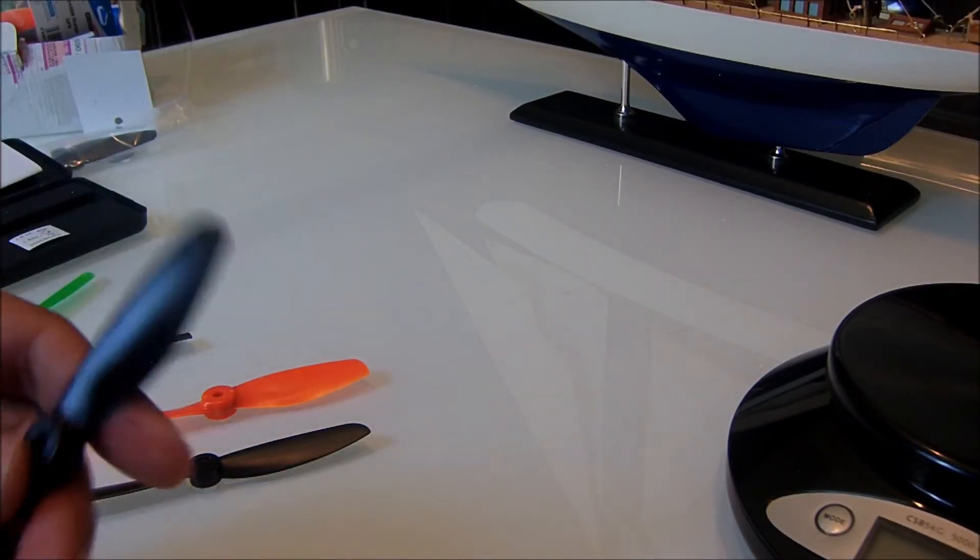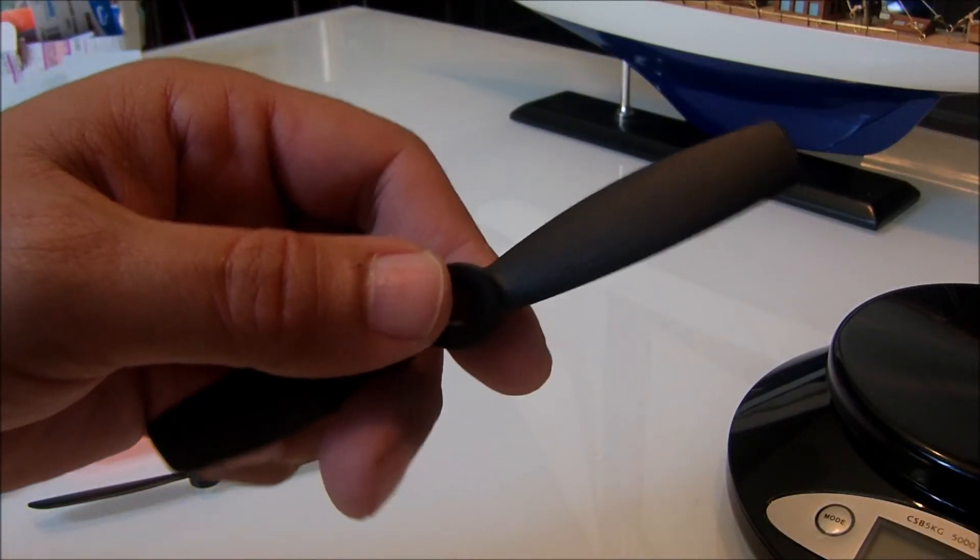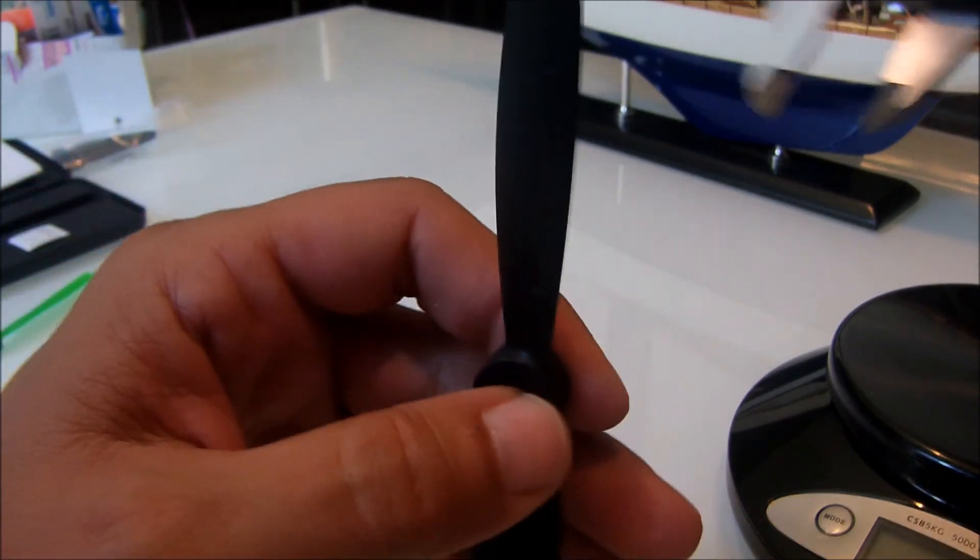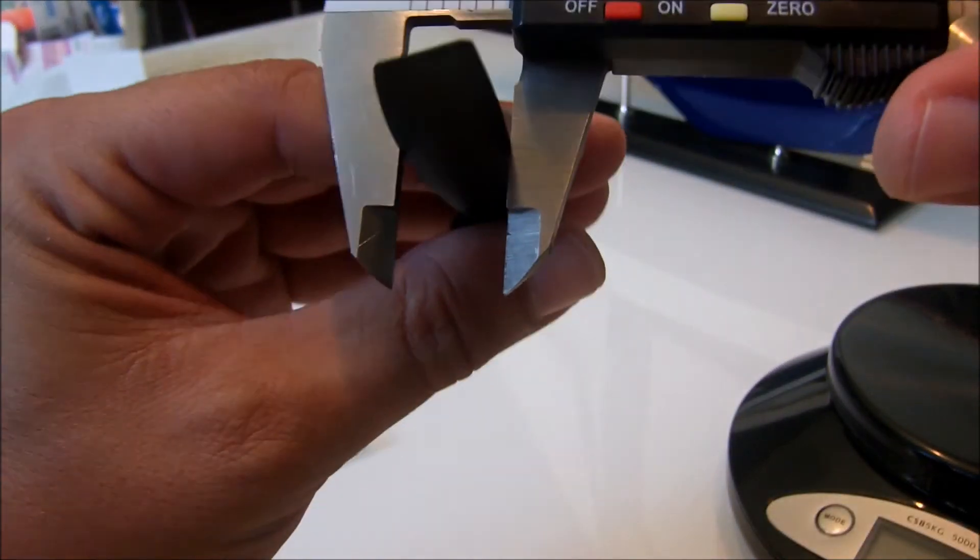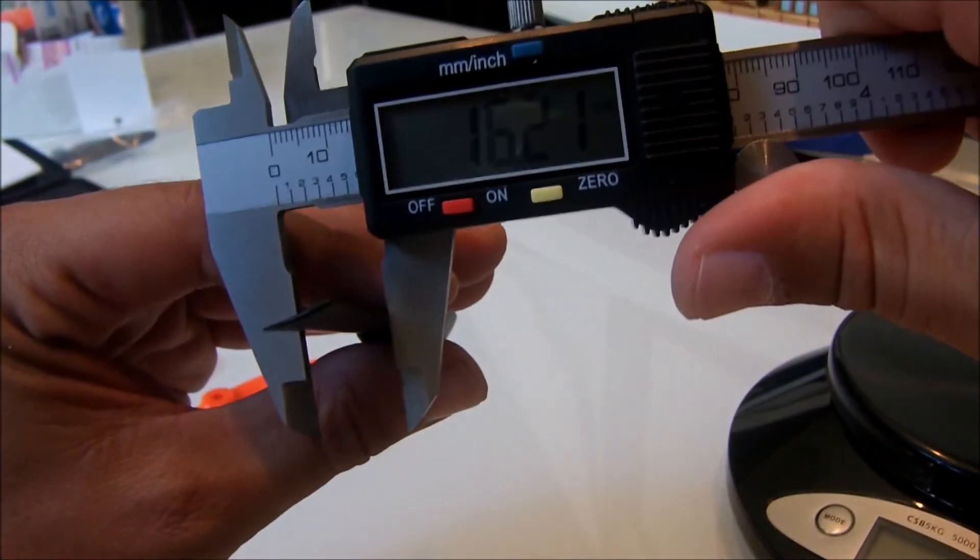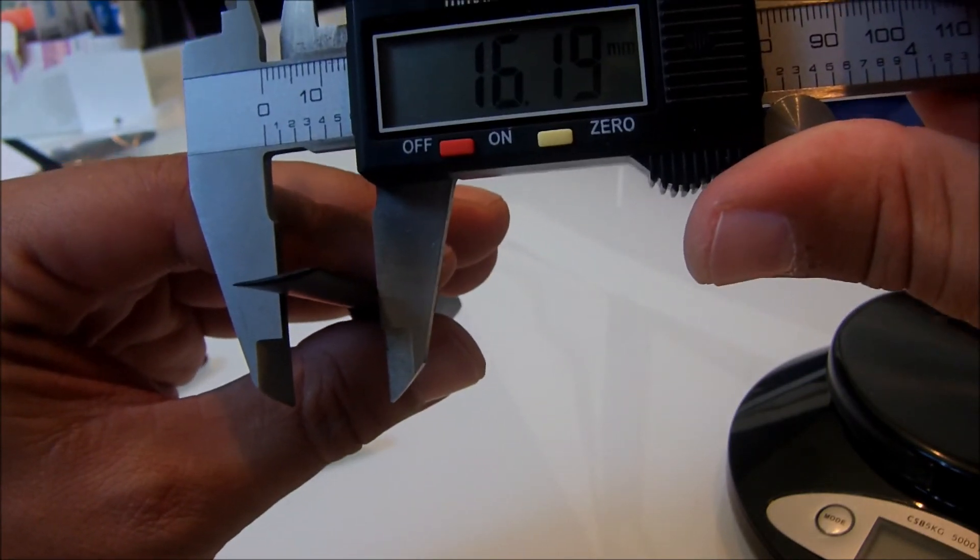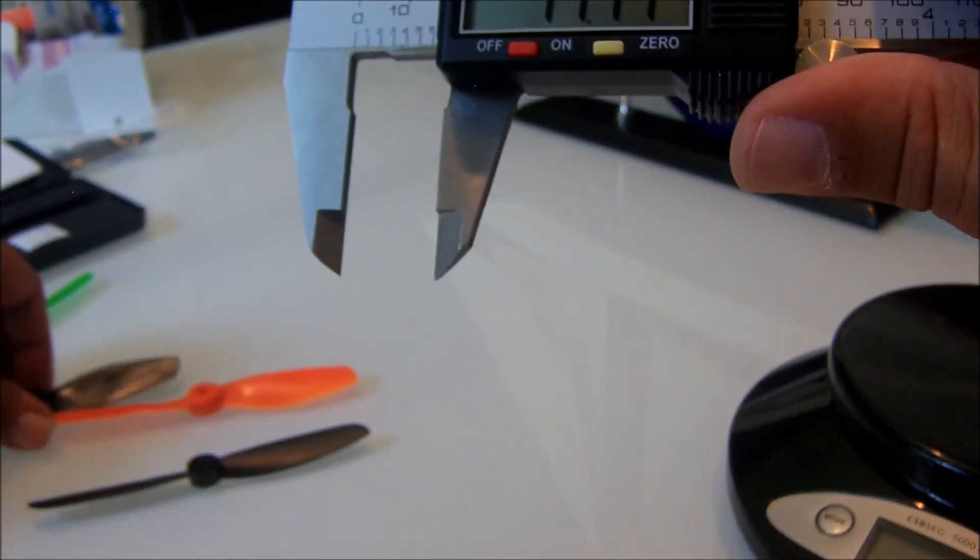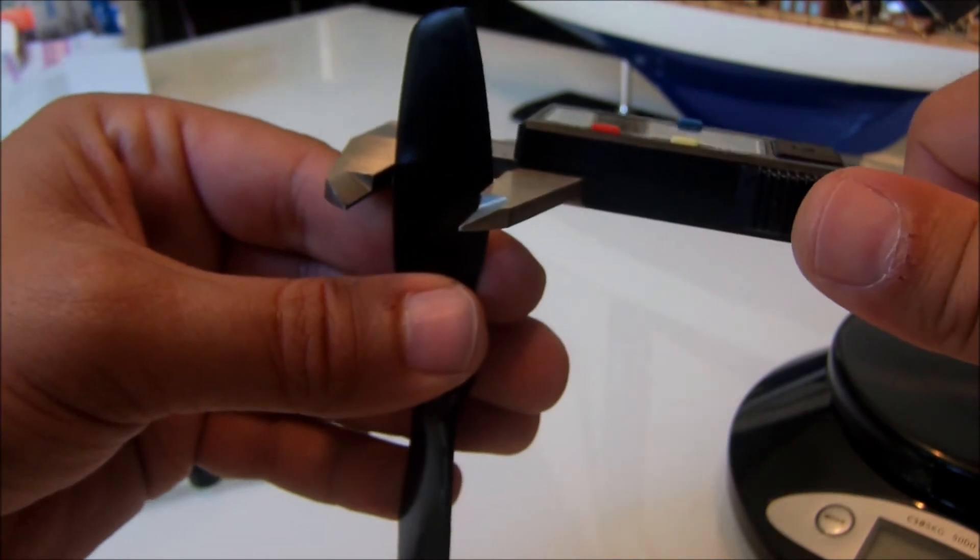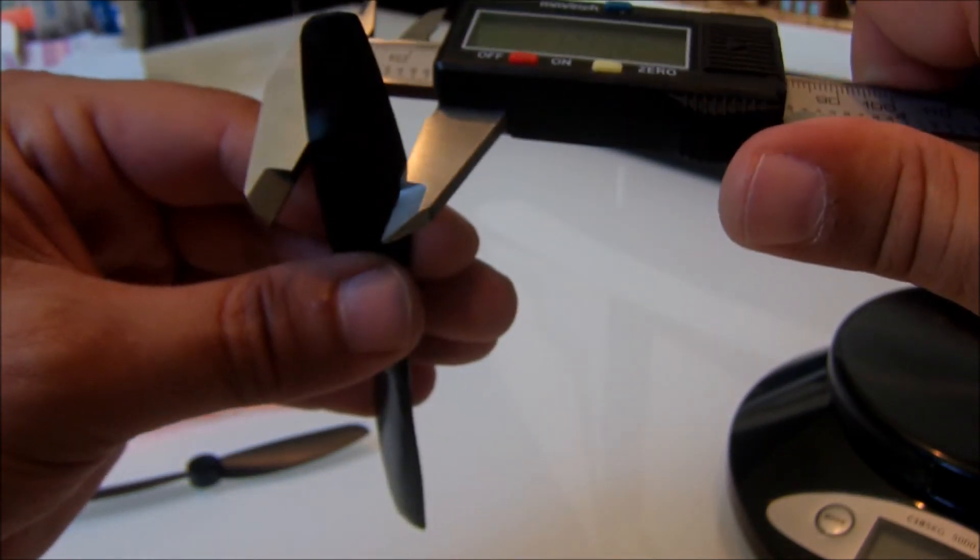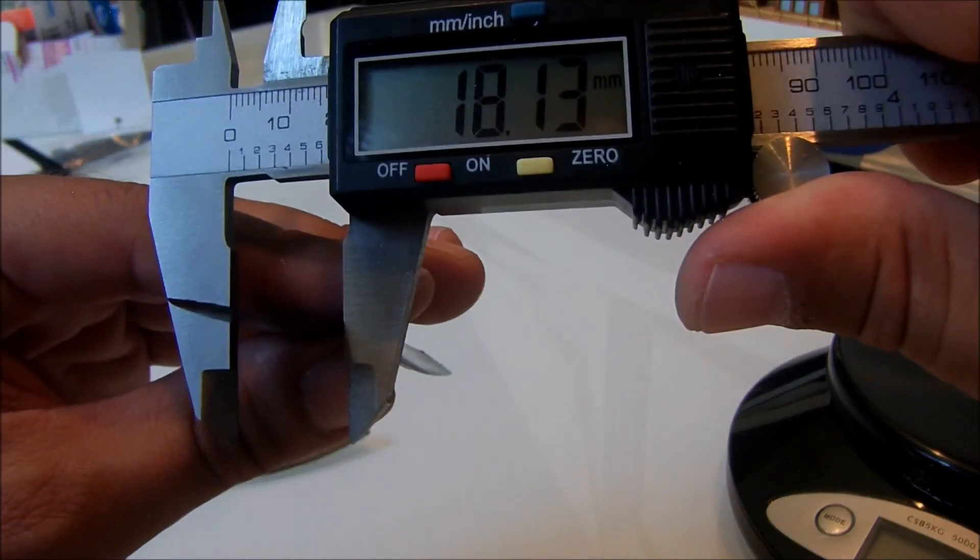Alright, so now prop surface area. We'll start with the bullnose 50-45 from HQ prop. Trying to get the widest area there, 16.2 millimeters on the width surface area. The new Gemfans look like 18.1 millimeters.